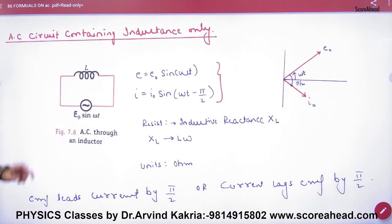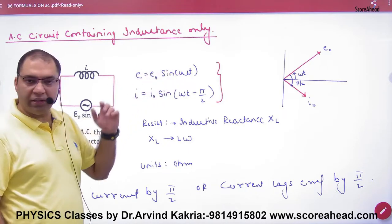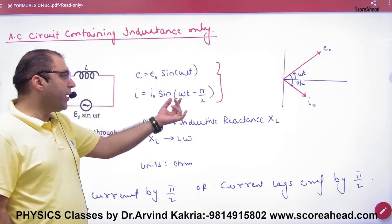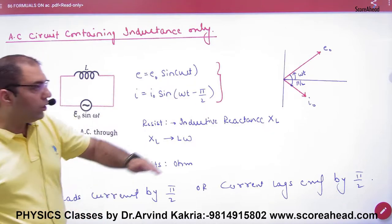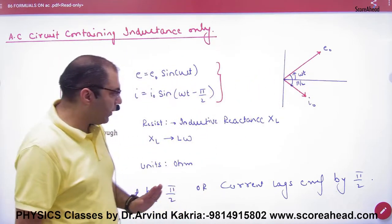In that way, the AC circuit containing inductor only, EMF E0 sin omega t, so the current is I0 sin omega t minus pi by 2. So if EMF is omega t, then the current lags by angle of pi by 2.